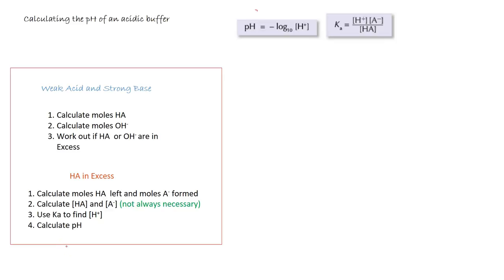Since one of our ways of making a buffer solution is to react a weak acid with a strong base, all we are doing here is completing the mixing of a weak acid with a strong base — calculations always for when HA is in excess. We calculate the moles of the weak acid, then the moles of the strong base added, work out if the weak acid or the strong base is in excess, and since we are talking about an acidic buffer the acid is going to be in excess. We then calculate the concentration of the acid and the salt, use Ka to find the concentration of H⁺, and then calculate the pH.